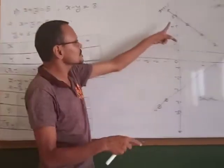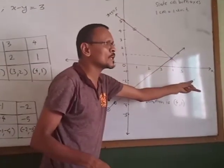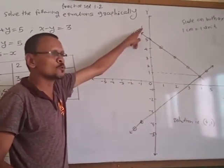First, these 4 points: 1, 2, 3 and 4. Draw the line passing through those 4 points. x plus y equal to 5.